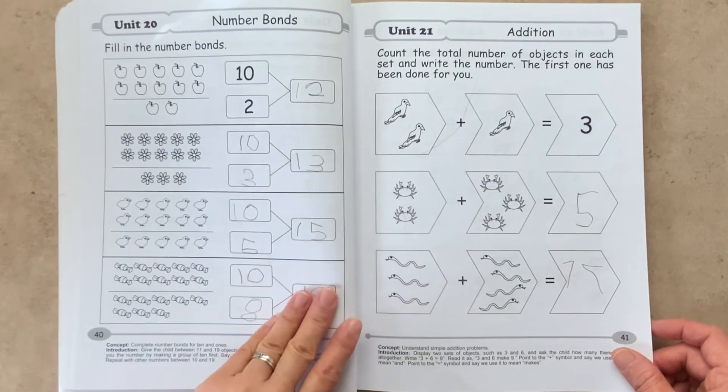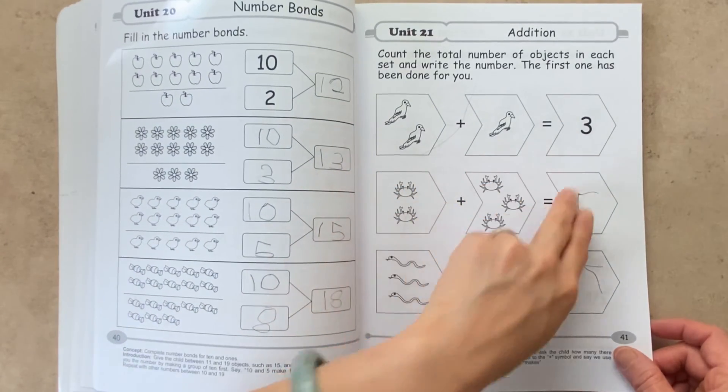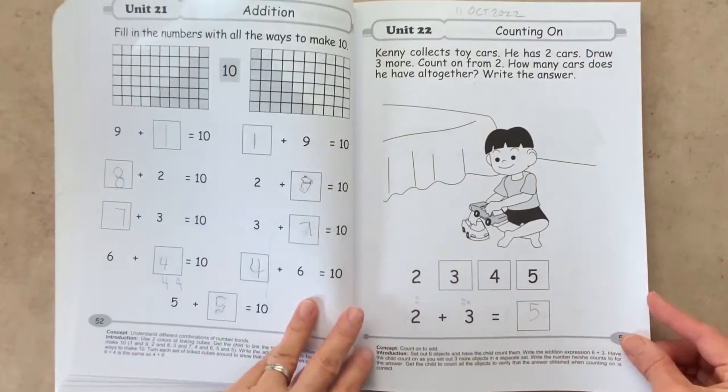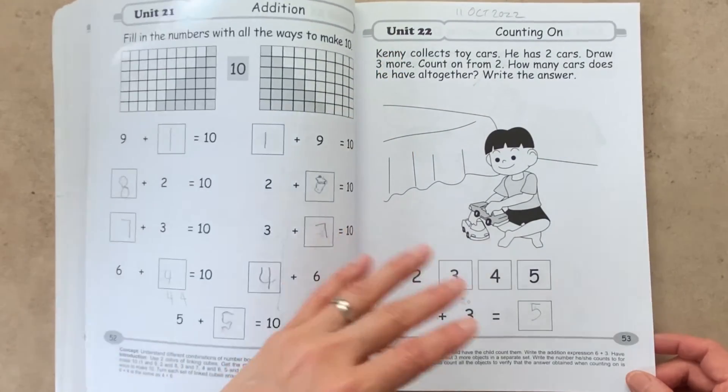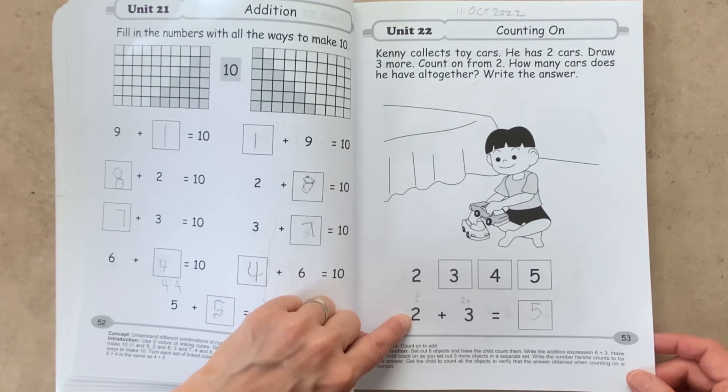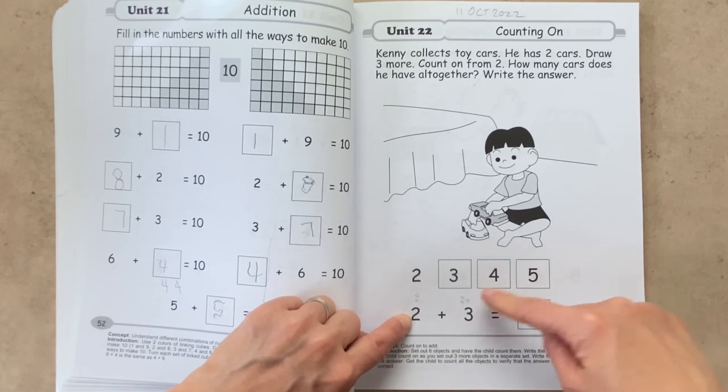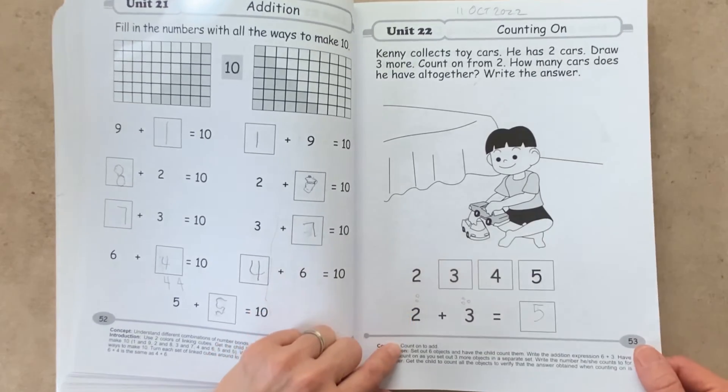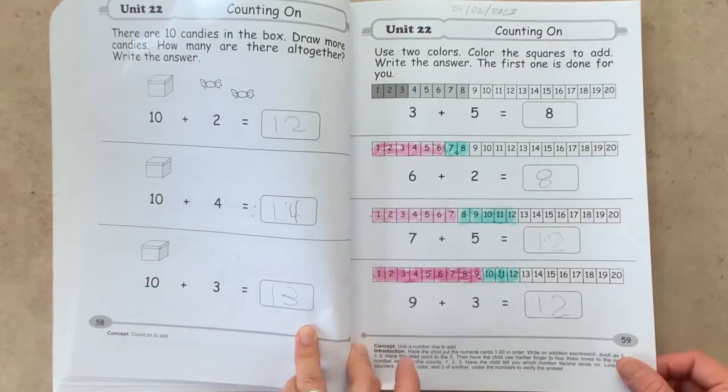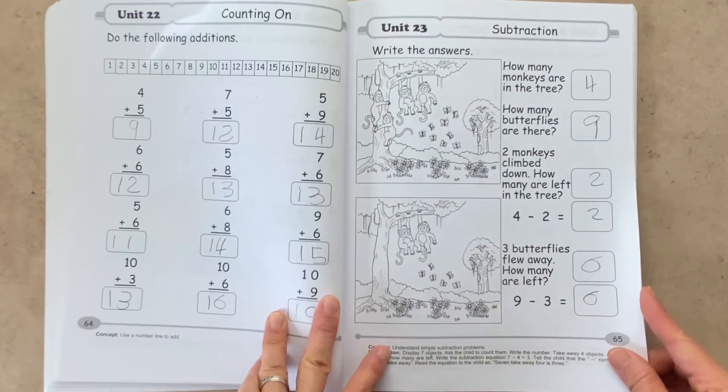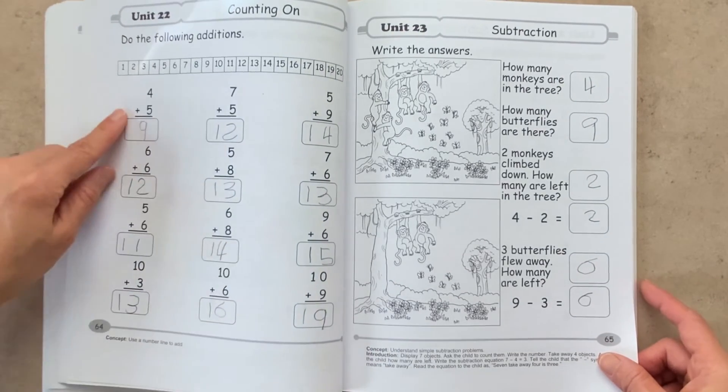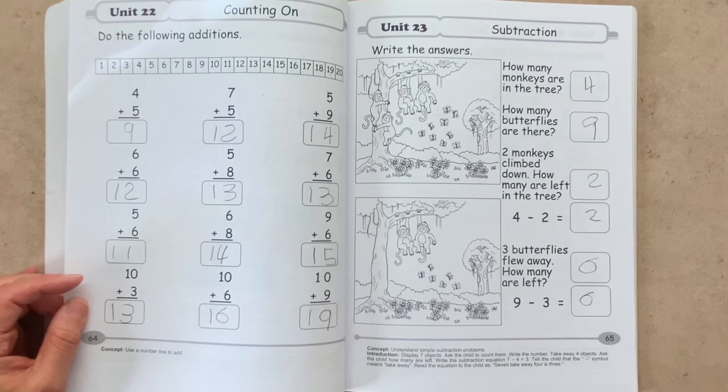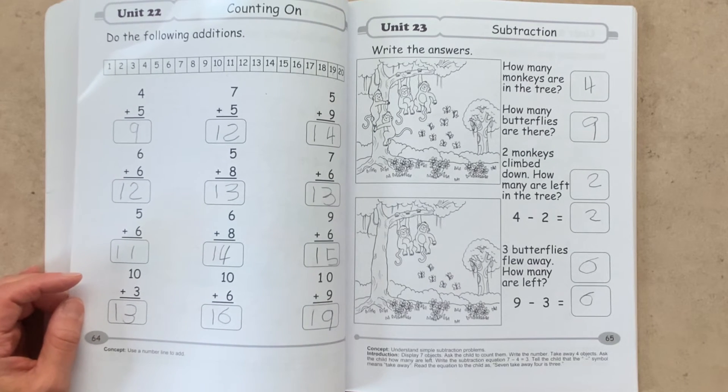Unit 21, now we're moving on to addition. So we're adding items in order to get the total. Now in unit 22, we are learning about counting on. So for instance, from 2, we count on 3 more. So 2, 3, 4, 5. That'll be 3 more in order to get to our answer, which is 5. And now here on page 64, we are showing addition in another way, in a new way. Do you see how Singapore Math takes a concept and pretty much shows the child different ways of presenting that concept?